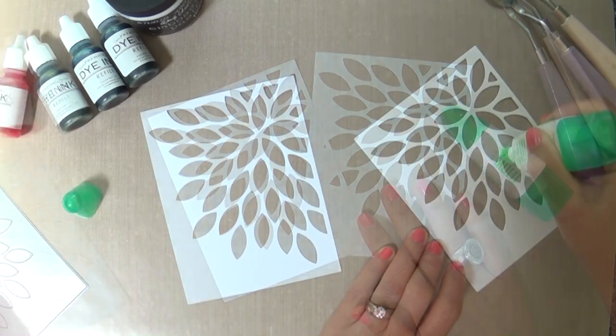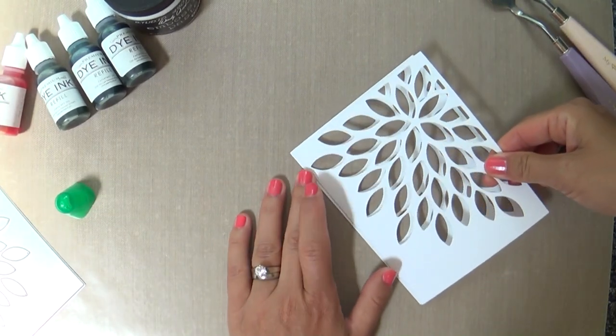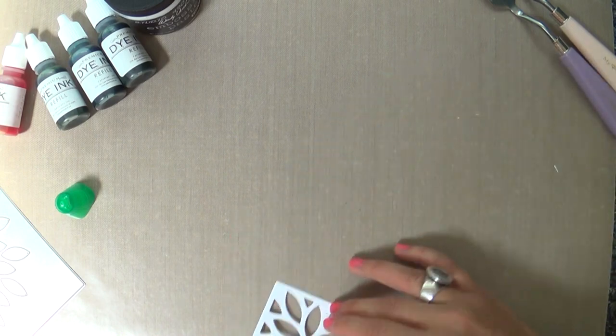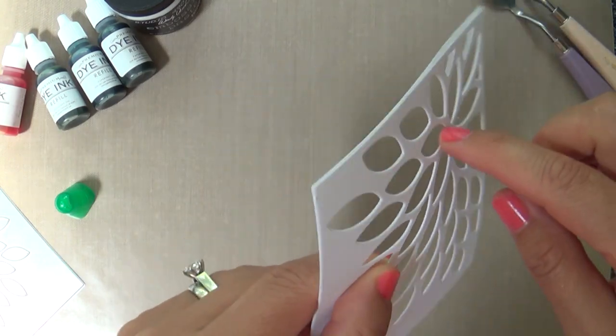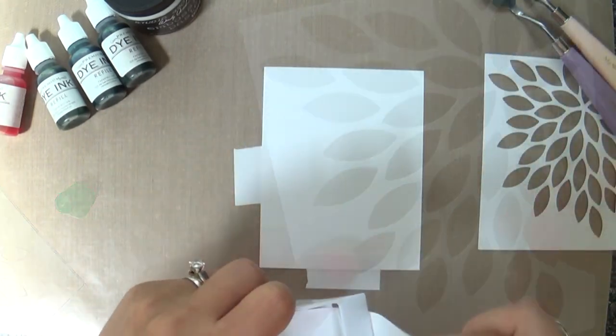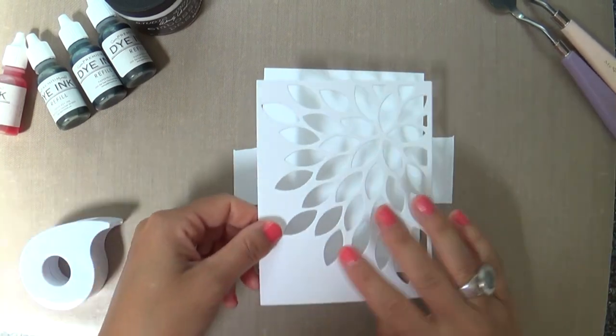I'm starting with this Mighty Bloom cover plate. I die cut two of those out of some scrap white cardstock and what I'm doing is creating my own little DIY stencil for my embossing paste. So you don't have to go and buy stencils. You can use those dies and get creative and create your own stencils.